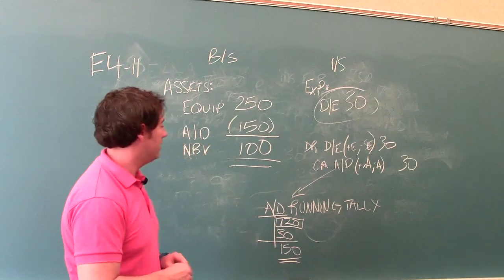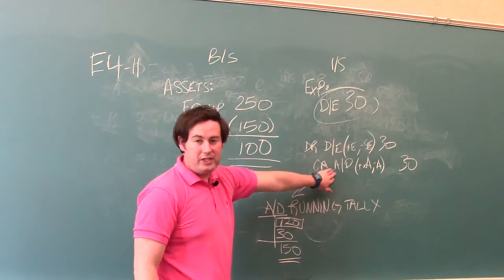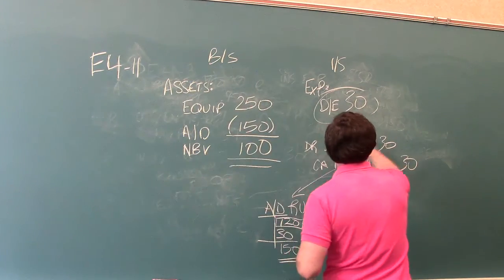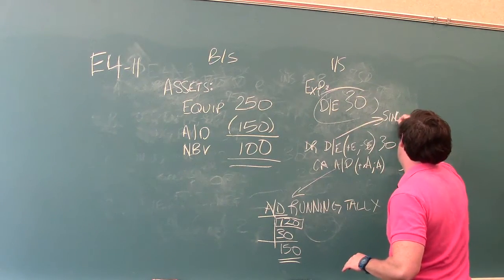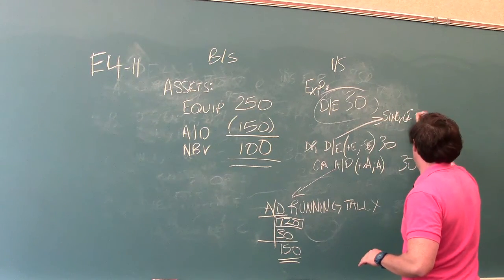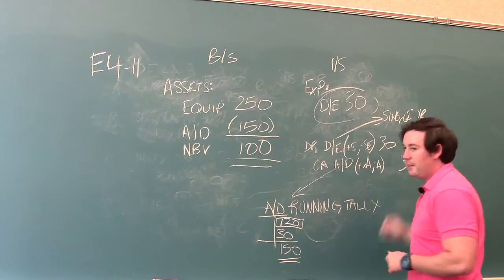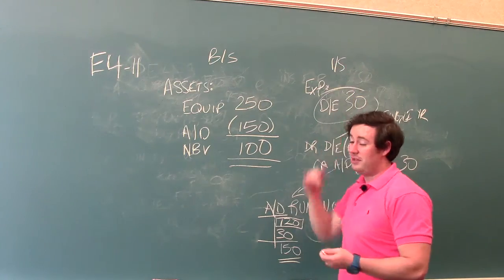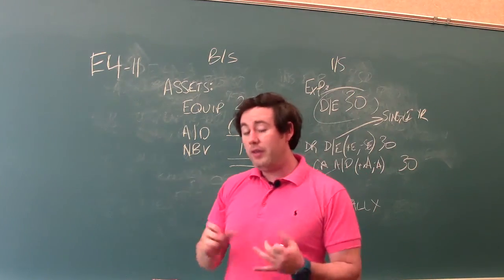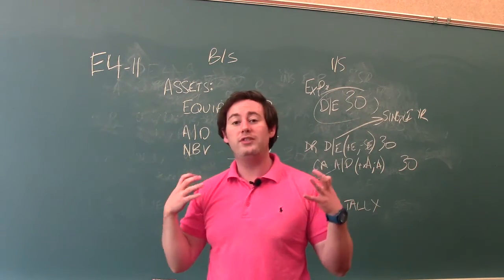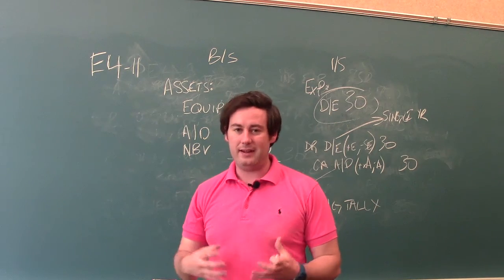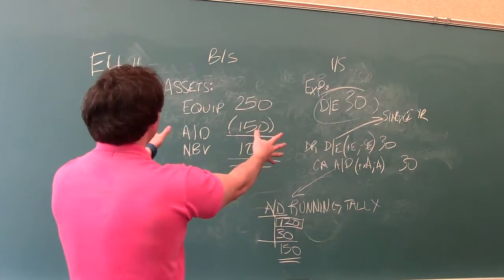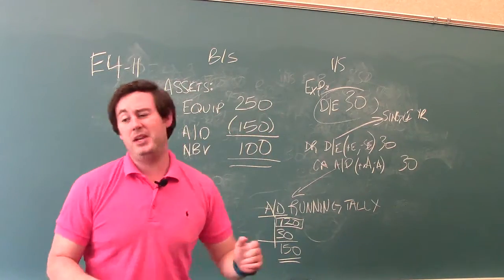So the thing I want you to get out of this is that accumulated depreciation is a contra asset. It keeps a running tally. Depreciation expense, this is for a single period, or a single year. Because as we'll talk about in closing journal entries, all of the income statement accounts, whether it's an expense or revenue, they will close to zero at the end of the year. And we'll talk about that during our closing journal entries. But for right now, this is problem E411. Email me your questions.